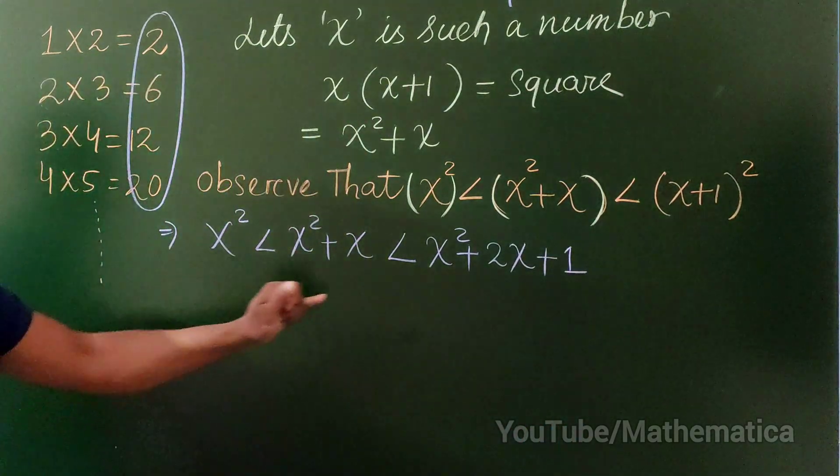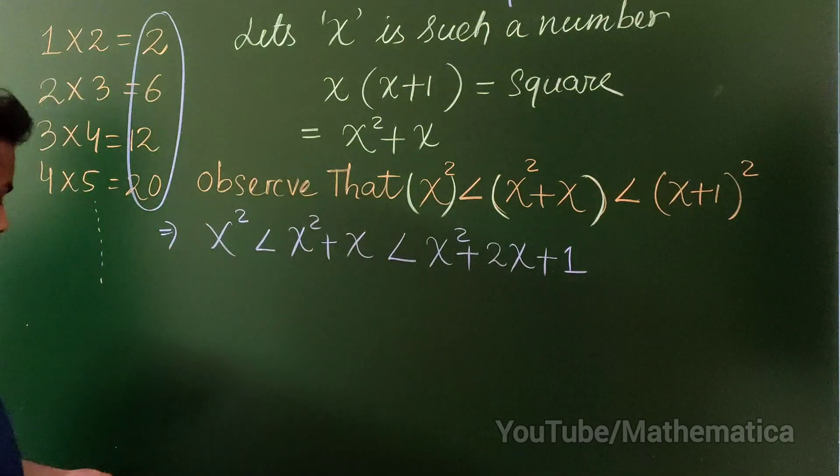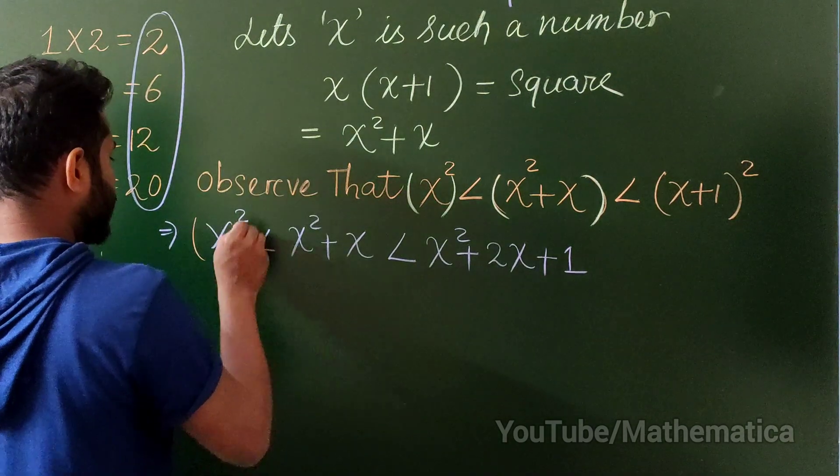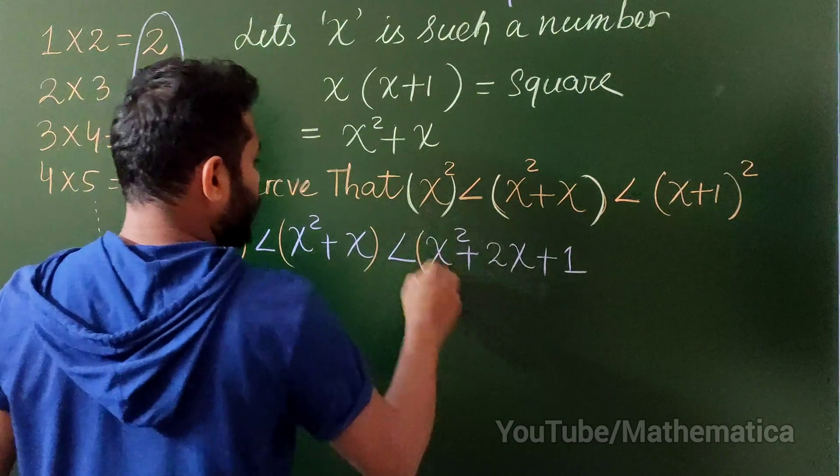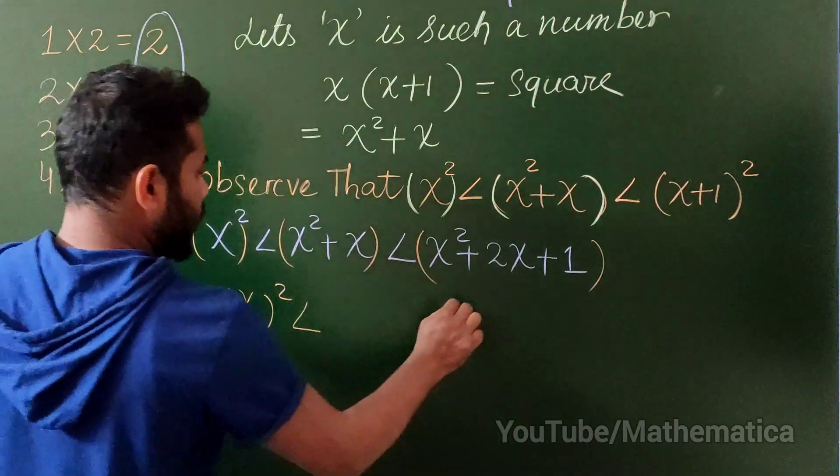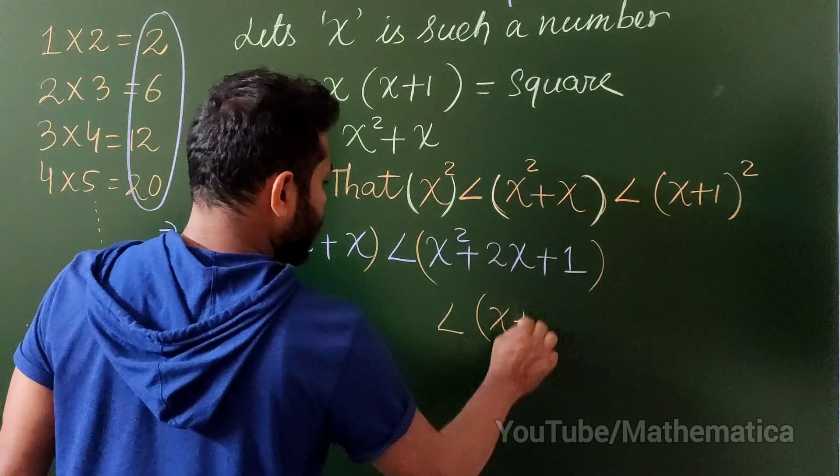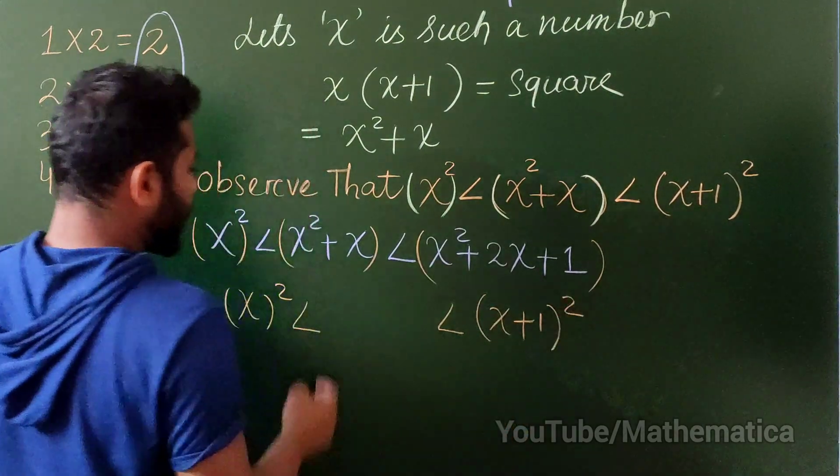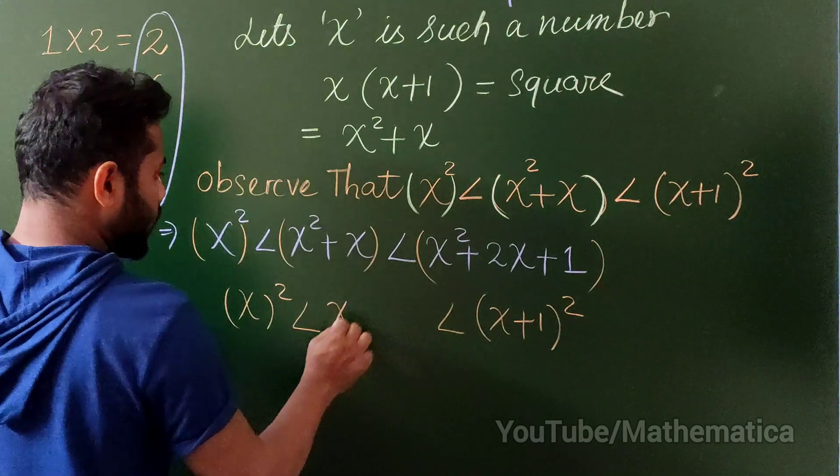So clearly you will see that this entire quantity, this quantity is bounded in between this. So this is perfect square. So this is perfect square and this is also perfect square. And note that this quantity is in between these two.